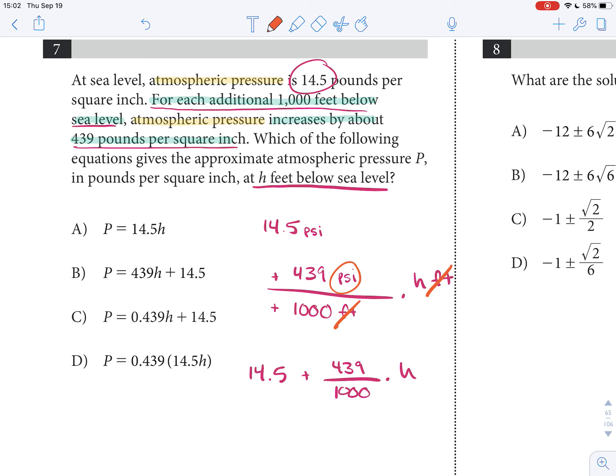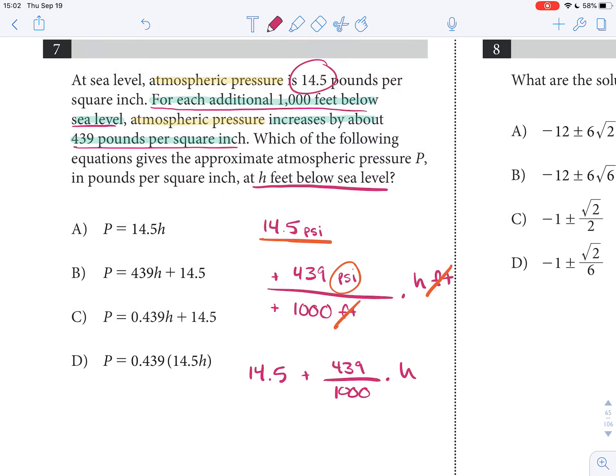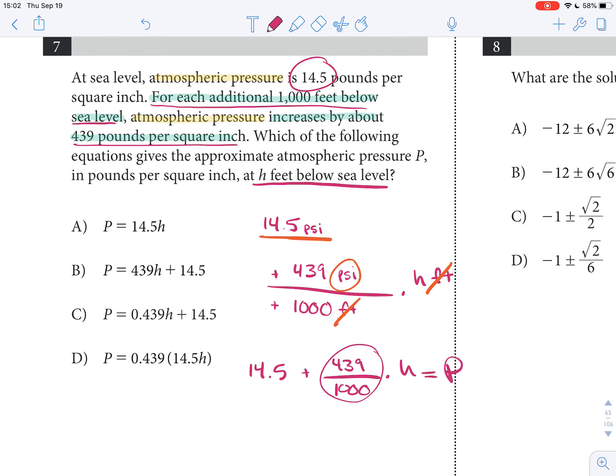And see how we're adding, we're going to basically be adding PSI, because we started at 14.5 PSI. So, we have to add PSI and PSI together. So, back to our full equation, this should ultimately equal our pressure, which is P, and I think the only thing that we had to do, really, once we've translated that is see that that's simplified. So that's going to end up being 14.5 plus, we move it over three decimal places, 0.439 H equals P, and looks like C is going to be our answer.